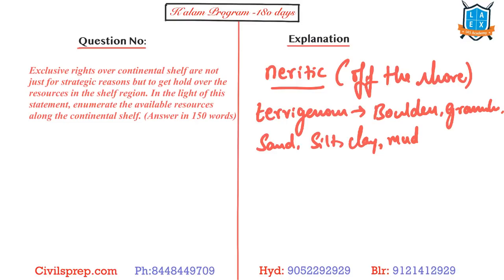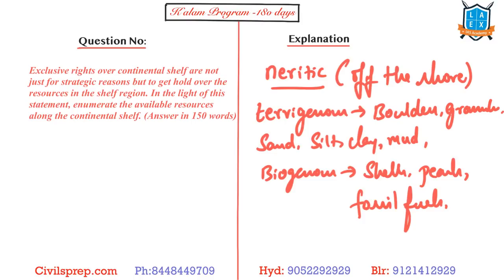What all you will have: sand, monazite sand, silt, clay. You'll have red mud, green mud, blue mud - all these are present. Along with this you will have biogenous reserves like shells, pearls, fossil fuels, gas hydrates just we saw. You may have coral polyps or coral reefs as well.